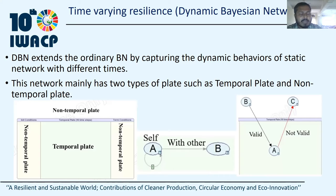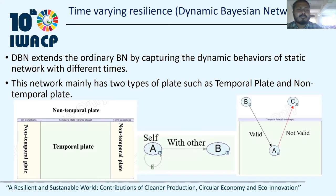Dynamic Bayesian network is the extension of the ordinary Bayesian network by capturing the dynamic behavior of a static network at different times. This network mainly has two types of plates: temporal plate and non-temporal plate. Nodes in the temporal plate change with time and nodes in the non-temporal plate are static, meaning they do not change with time. This network has two types of dependencies: self and with-other. Self means node A depends on node A with changes of time — for example, node A at time t+1 depends on node A at time t. With-other means node B depends on node A.